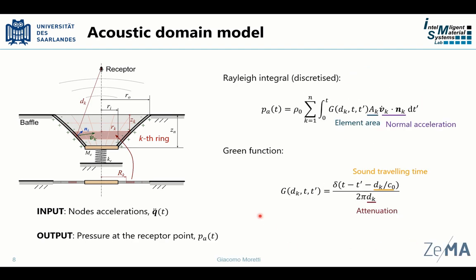The acoustic model uses the acceleration profile over the membrane to predict the pressure field. The acoustic pressure is calculated through the so-called Rayleigh integral, here in the discretized form, and it depends on the time history of the normal acceleration of the ring elements through a convolution kernel, which basically accounts for the sound travelling distance between a point on the membrane and a receptor point, and the pressure attenuation due to the distance between source and receptor.